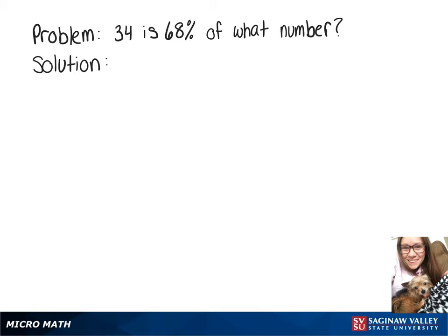In this video, we have the problem: 34 is 68% of what number? So we know that the word 'is' means equals, so we'll have 34 equals. We have to turn that percent into a decimal, so 0.68. 'Of' implies multiplication, and then 'what number' — we just have to put an x there.